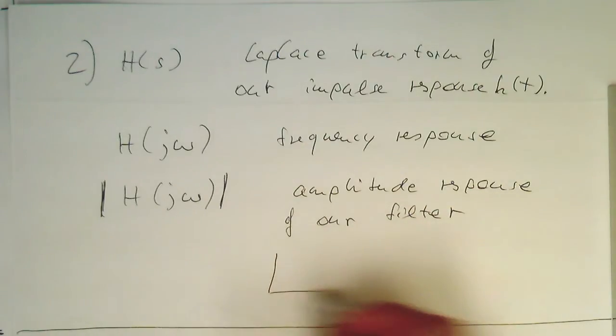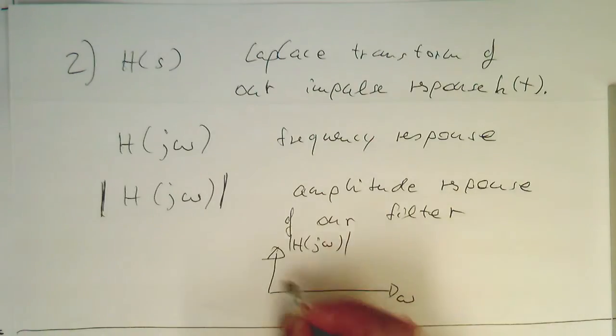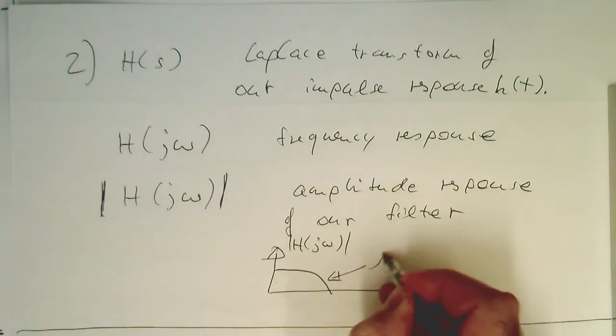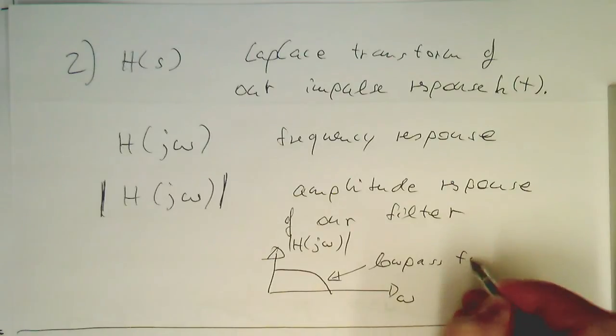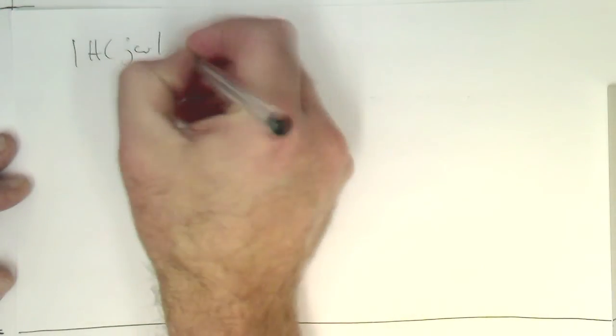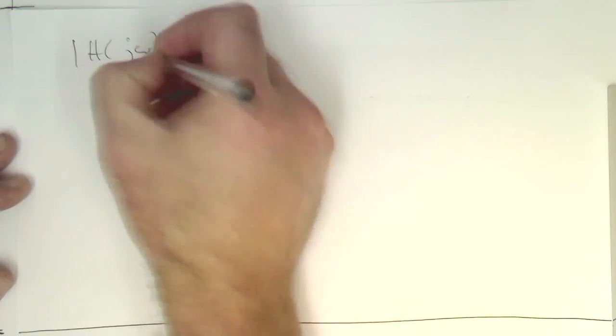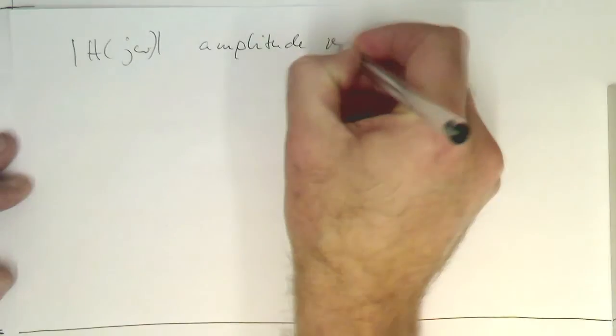For example, if this is here omega, this is H to j omega, and we're getting a response which looks like that, then this is obviously a low pass. The amplitude response was calculated in this way here.